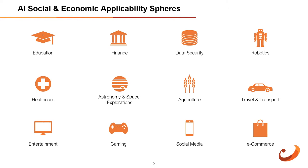AI in healthcare: in the last five to ten years, AI has become more advantageous for the healthcare industry and is going to have a significant impact. AI can help doctors with diagnosis and can inform when patients are worsening so that medical help can reach the patient before hospitalization. In astronomy, artificial intelligence can be very useful to solve complex universe problems, helping understand how the universe works and its origin.